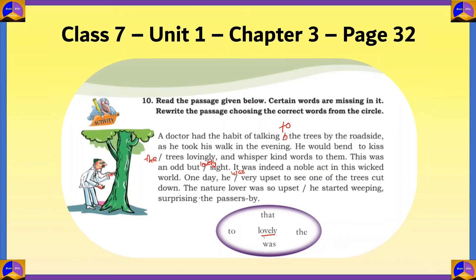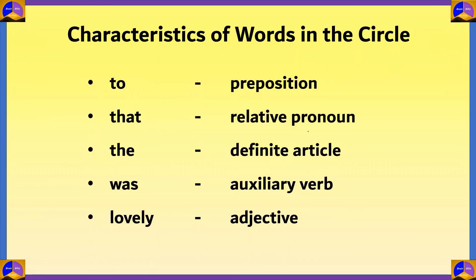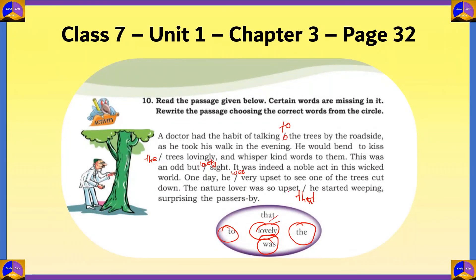Fifth blank: 'The nature lover was so upset [dash] he started weeping, surprising the passers-by.' We've already used 'to,' 'the,' 'lovely,' and 'was,' so the remaining word is 'that.' 'That' is a relative pronoun which relates the nature lover to how he reacted to the situation.